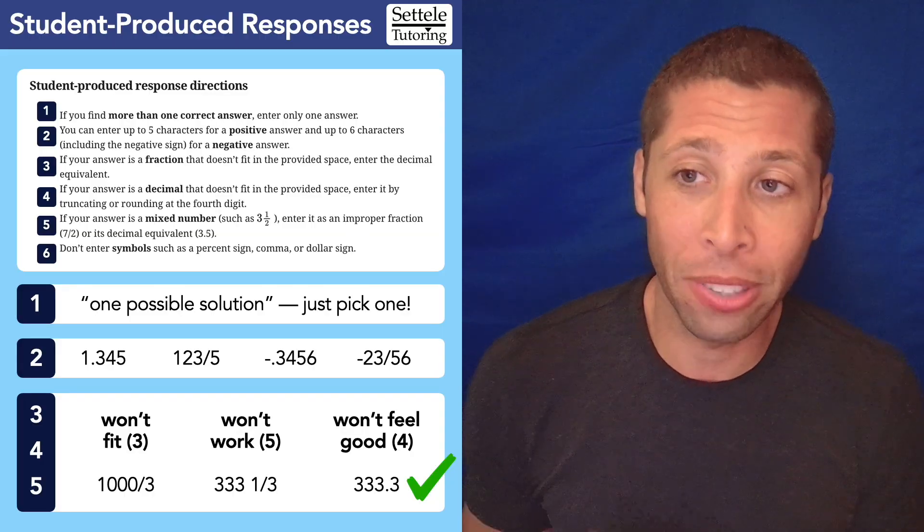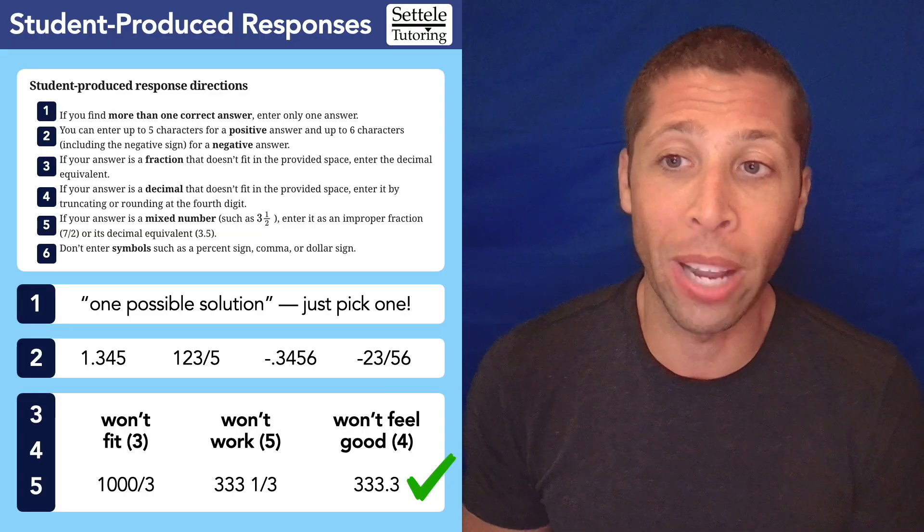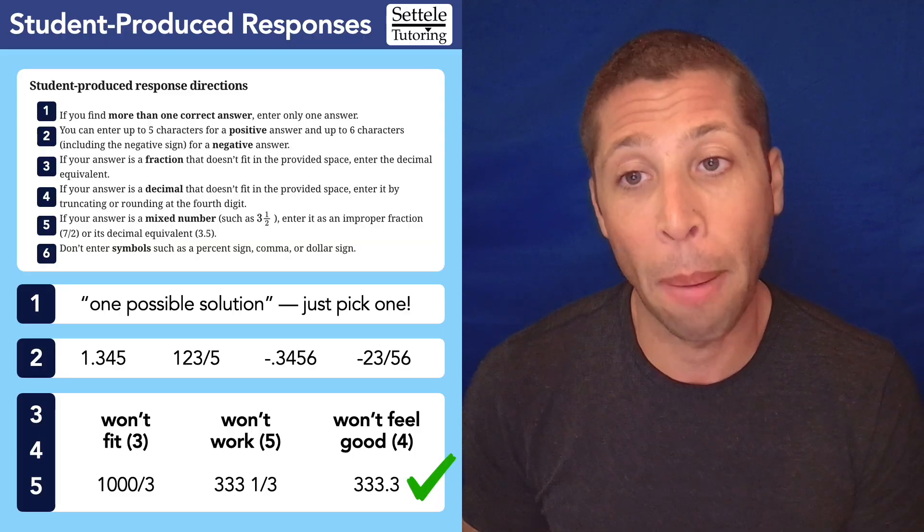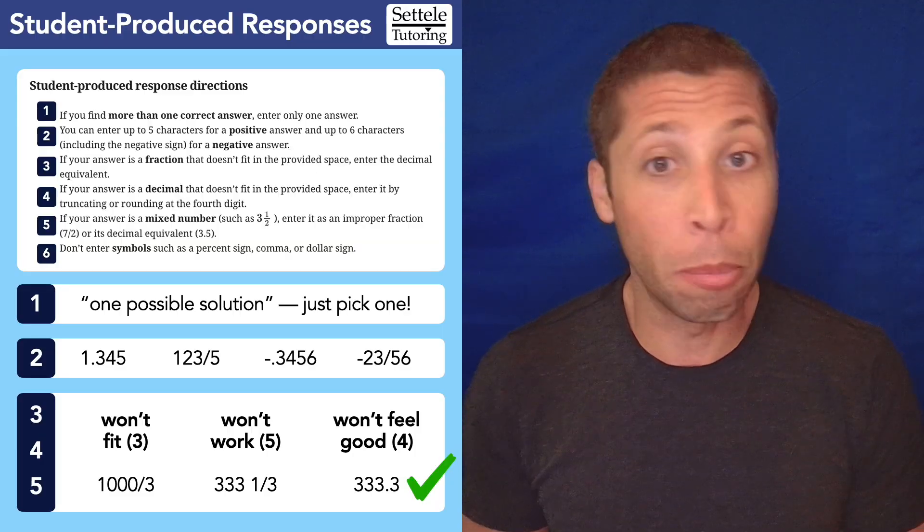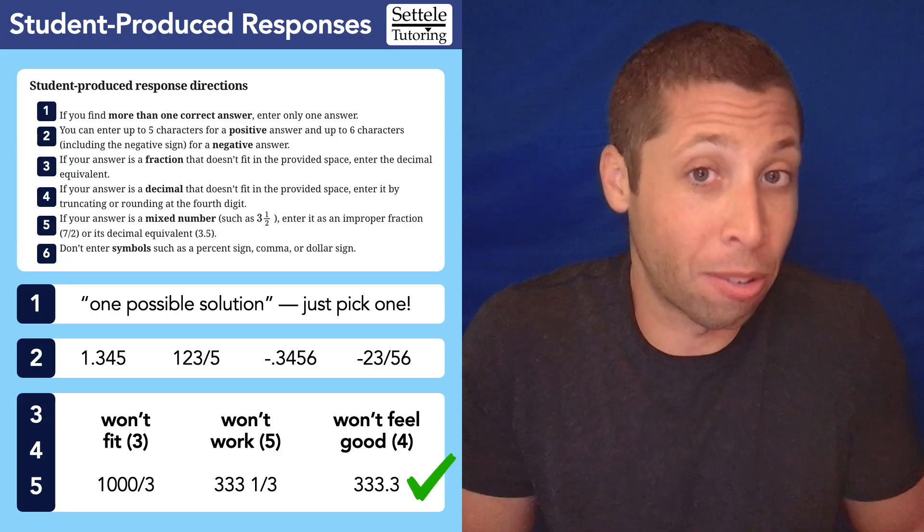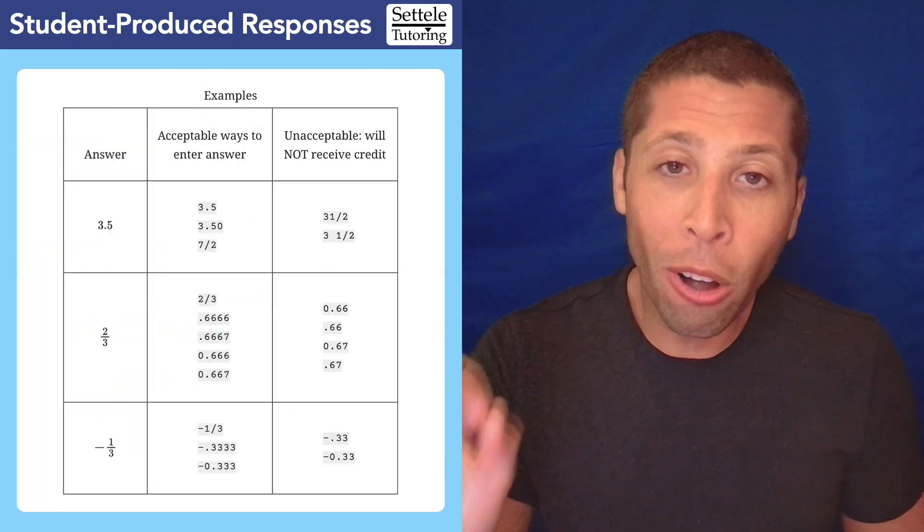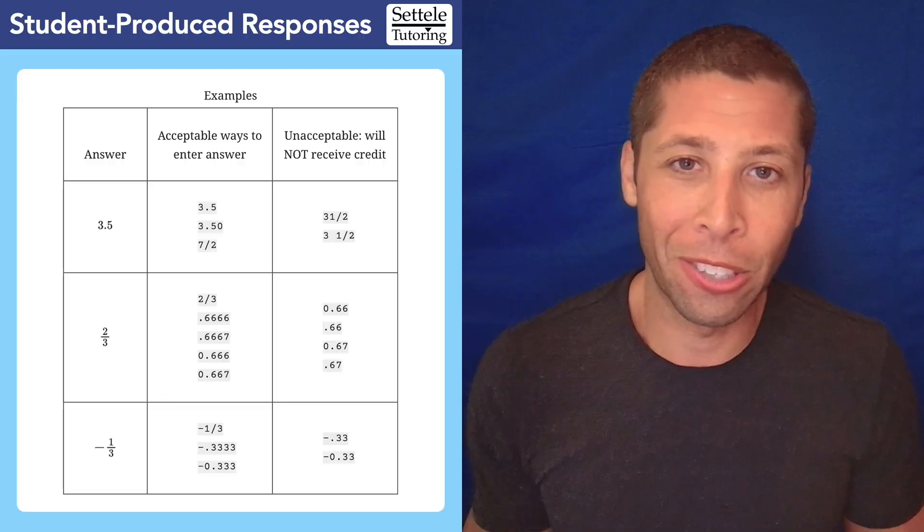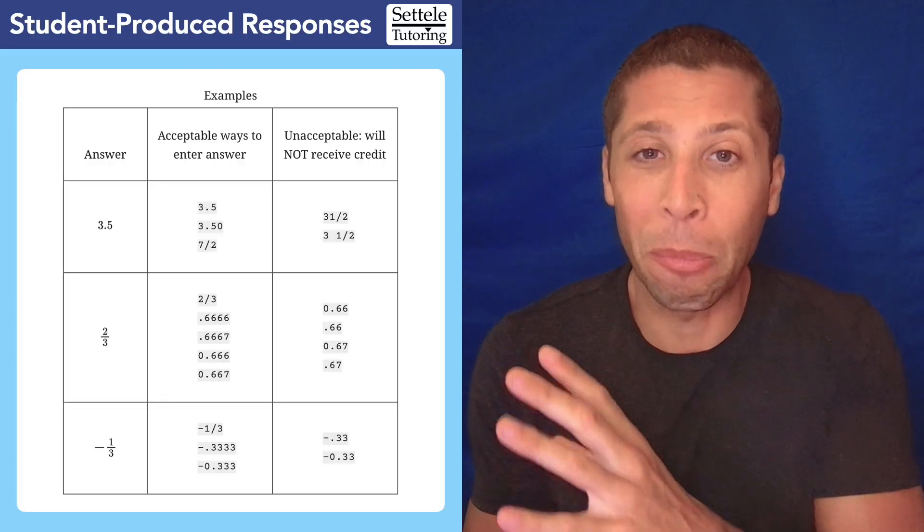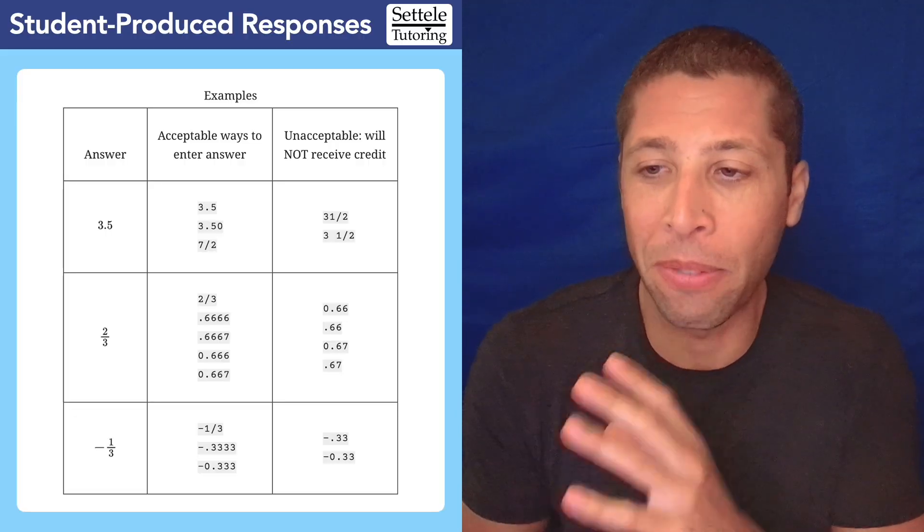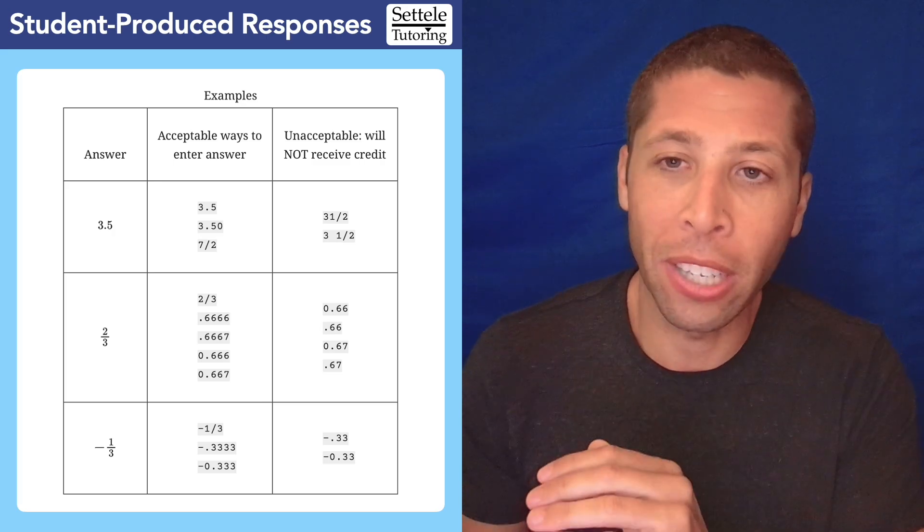Now, before we move on to some more examples, let's just look at rule six. It's nice and easy. Don't enter symbols such as a percent sign, comma, or dollar sign. I am pretty sure Blue Book doesn't even let you do that. So that's a rule that's pretty easy to follow. But they also gave us examples in a chart right below those set of instructions. And this is where most people lose their points is if they had just looked at this chart, they would have been fine. So I'll just talk about the things that are interesting about it.